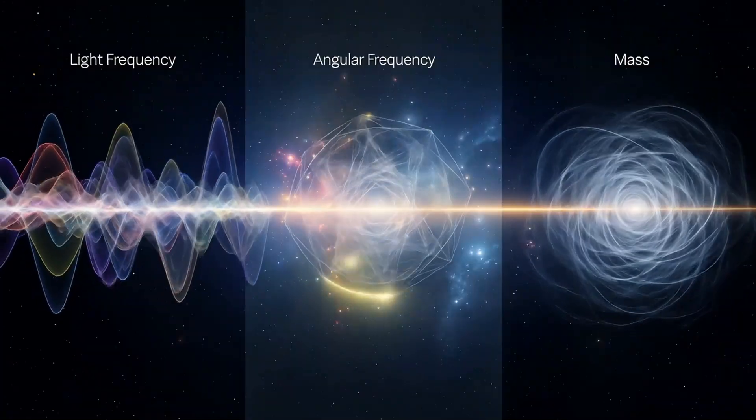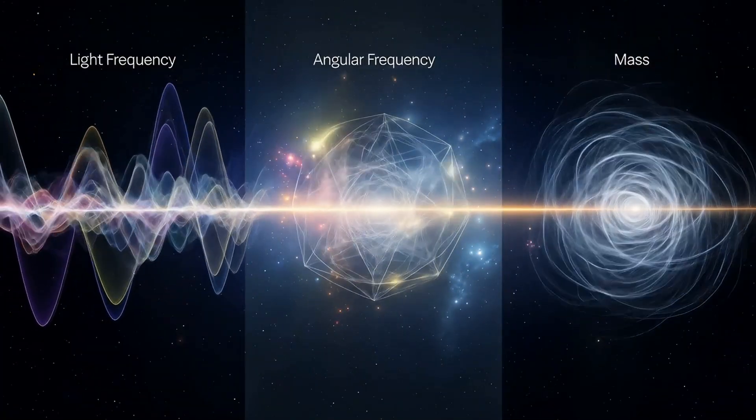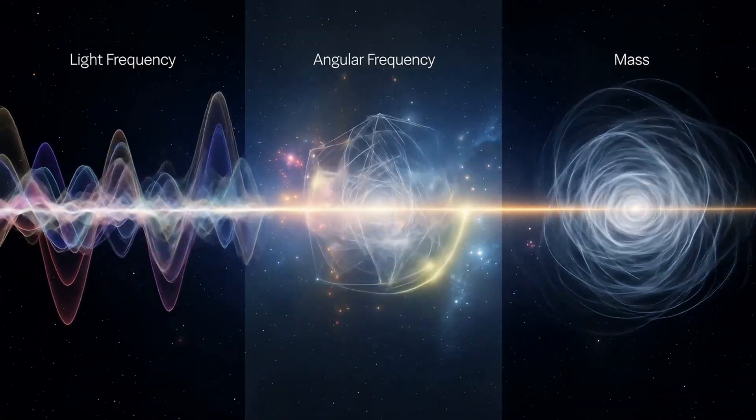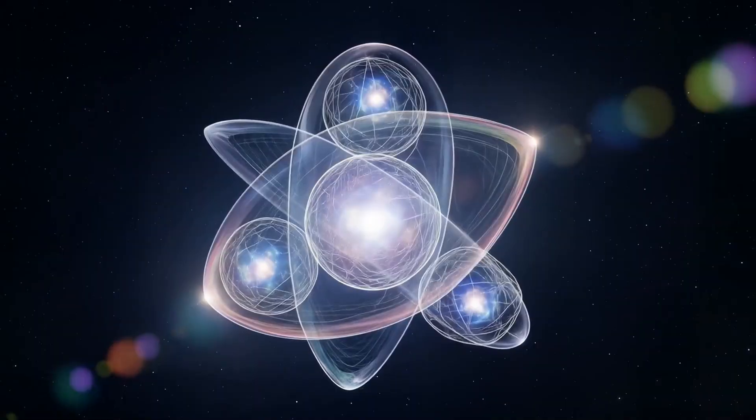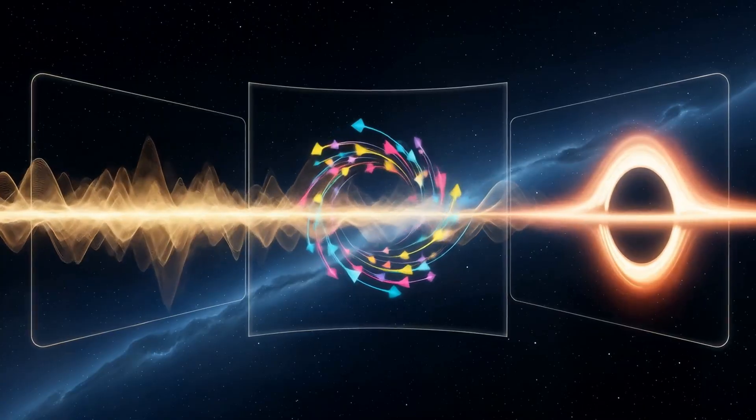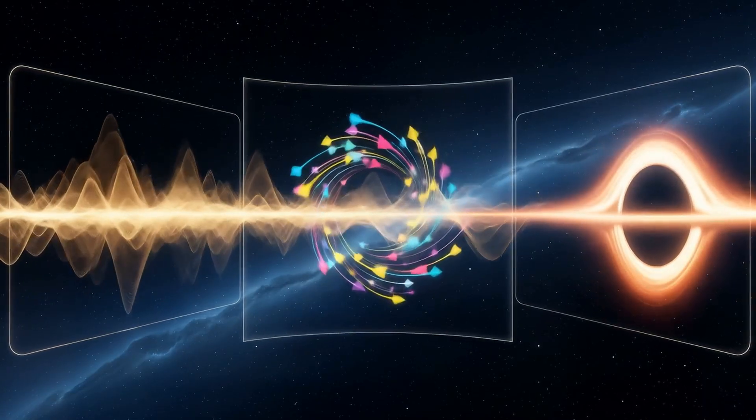When the interference is partial or angular, the energy is distributed differently. This is why frequency, angular frequency, and mass are three ways of describing the same geometry of information. It is spin, orientation, and projection.